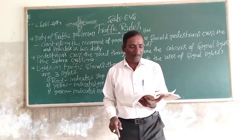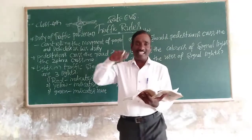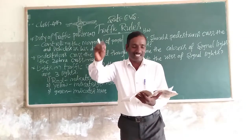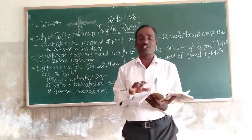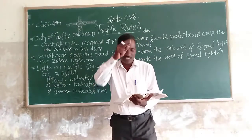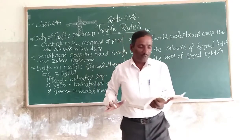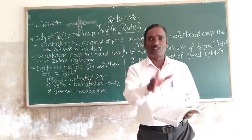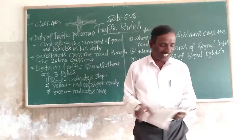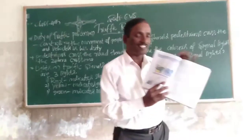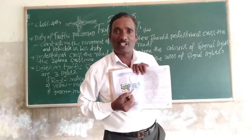Stop — you should not cross the road when the red light is on. There is another signal light for pedestrians to cross the road. Look there — only when the pedestrian light is on can we cross the road at the zebra crossing. We cannot cross just because the vehicles have stopped.